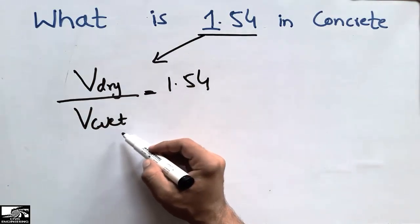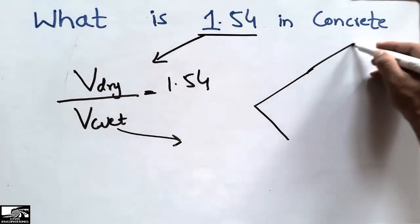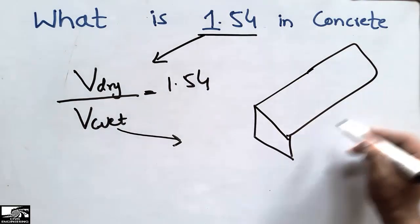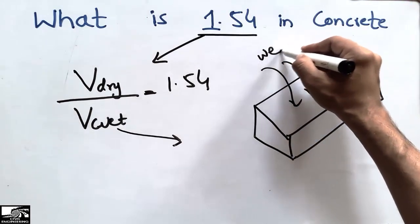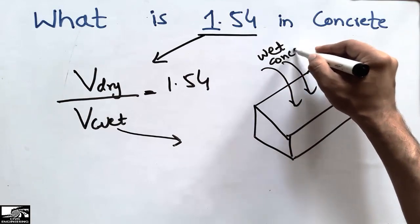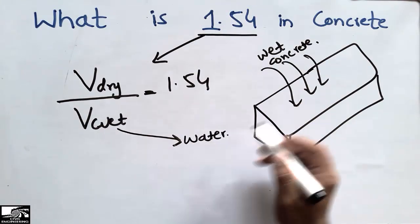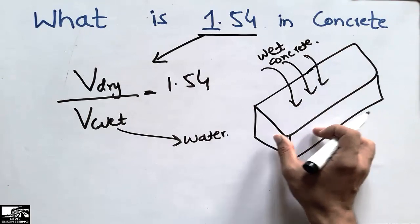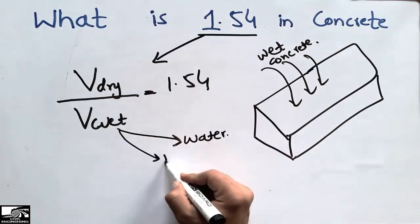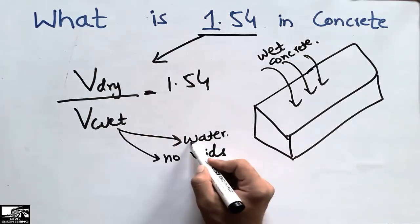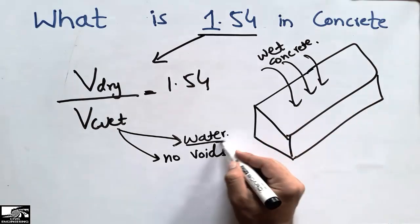Consider a beam — when we place concrete in this beam, the concrete contains water, which is called wet concrete. When you place wet concrete in a beam, it fills the whole section of the beam. There are no voids present because water fills the voids between the coarse aggregate particles. Each void is being filled by the water in the wet condition.